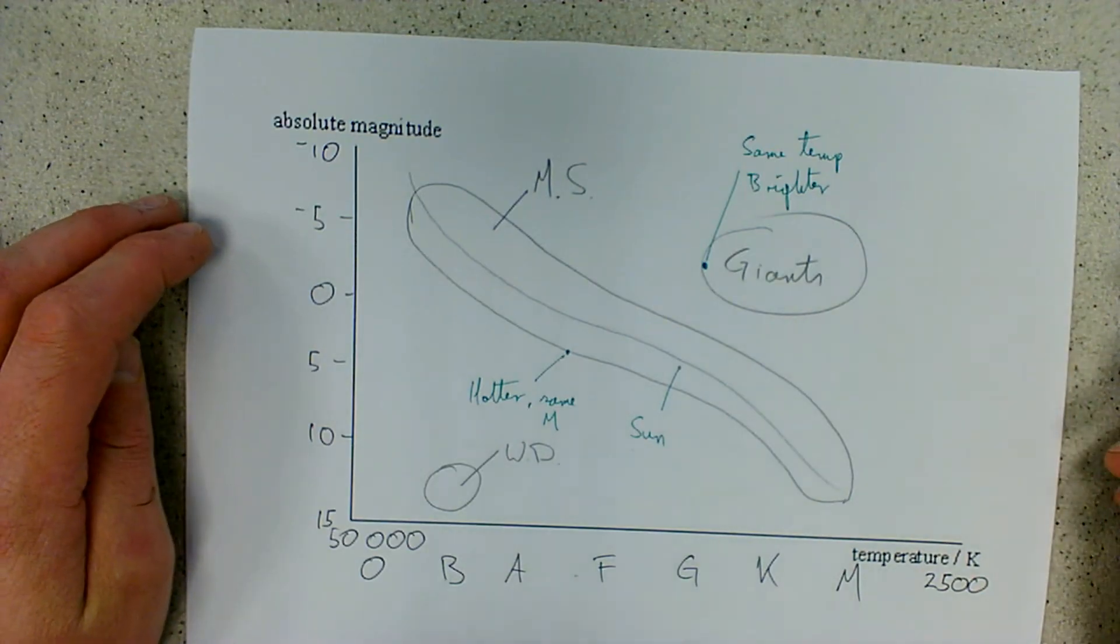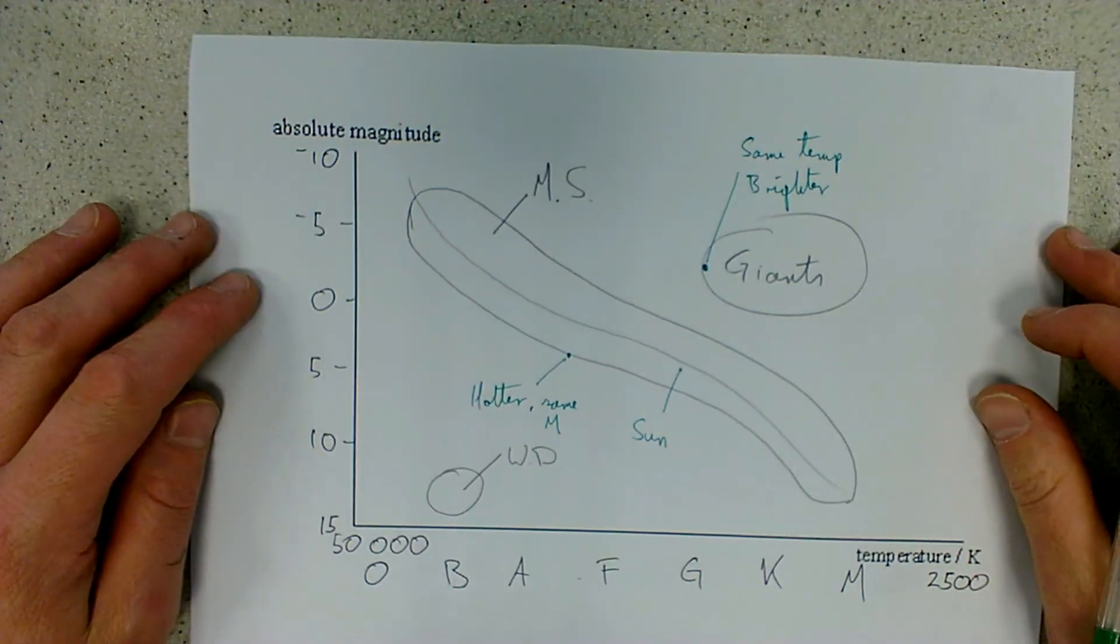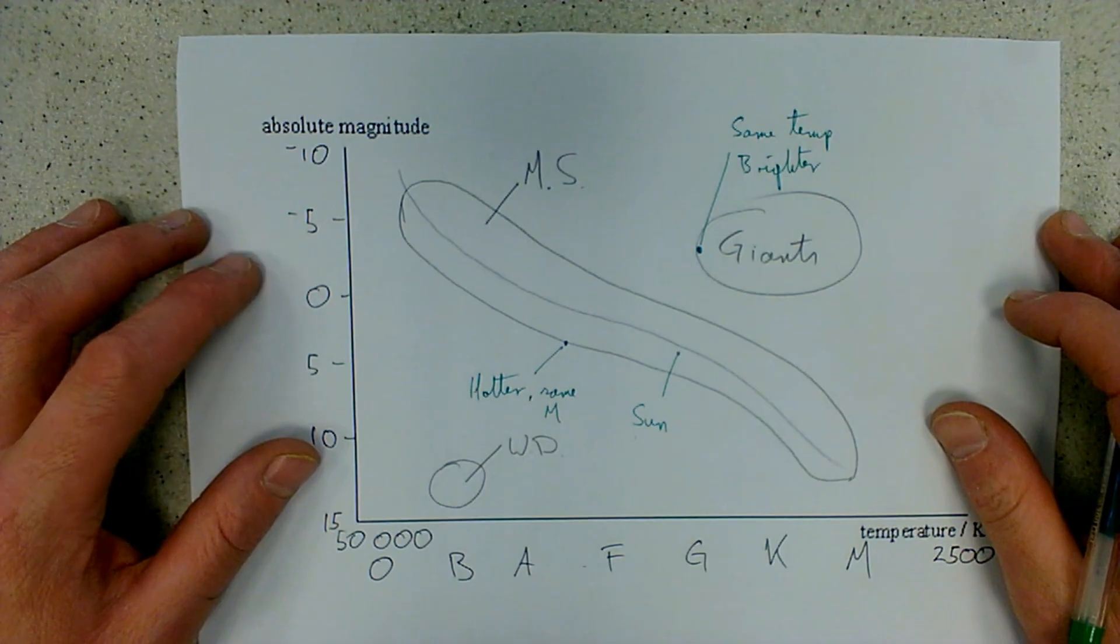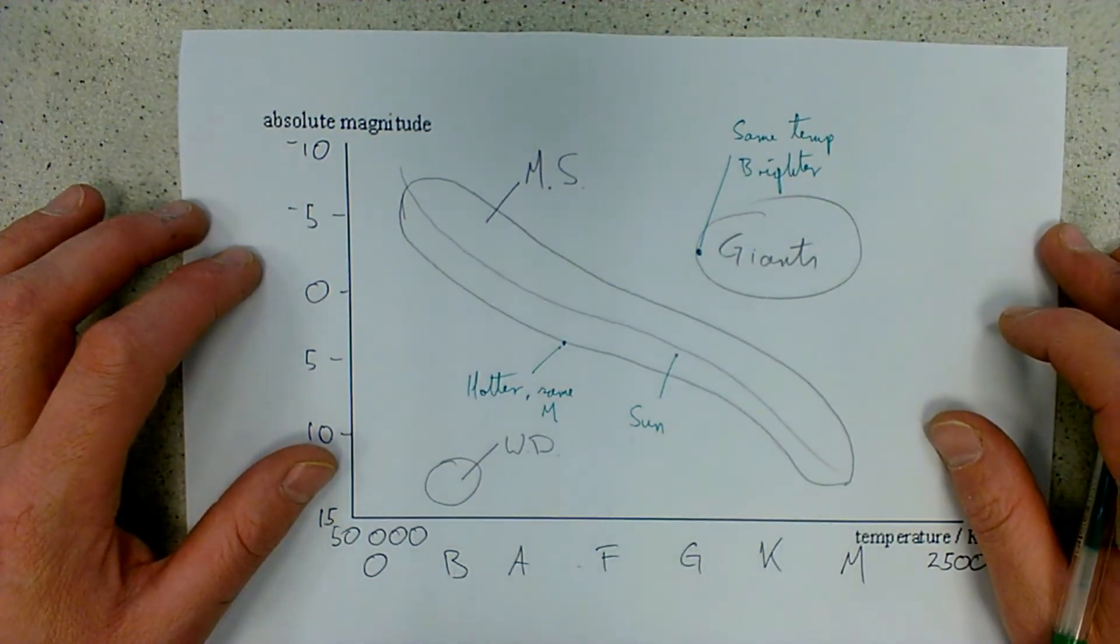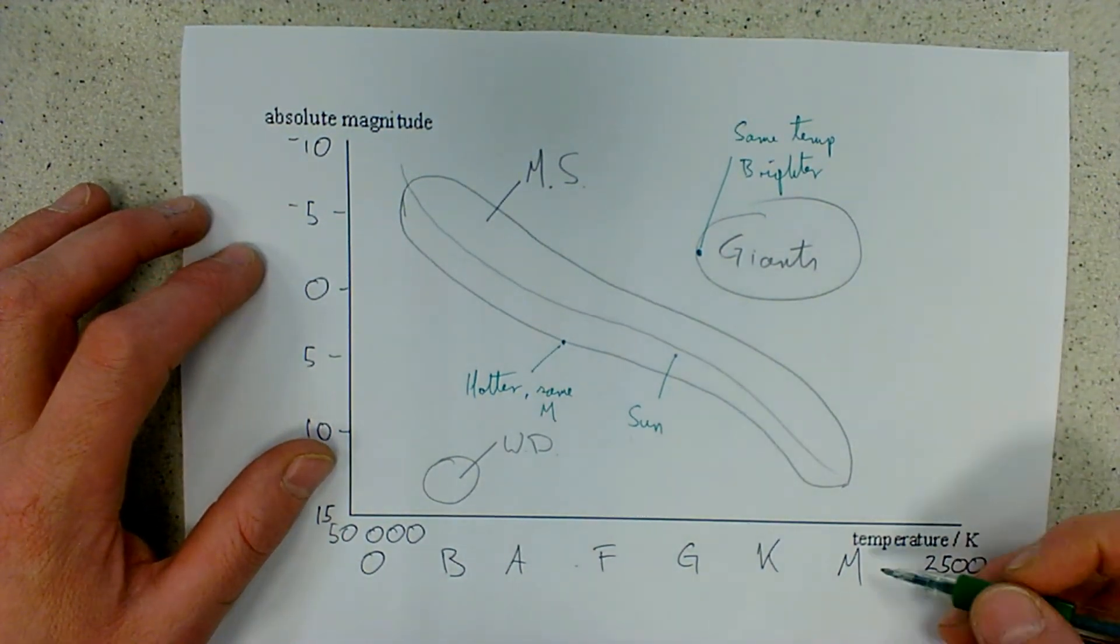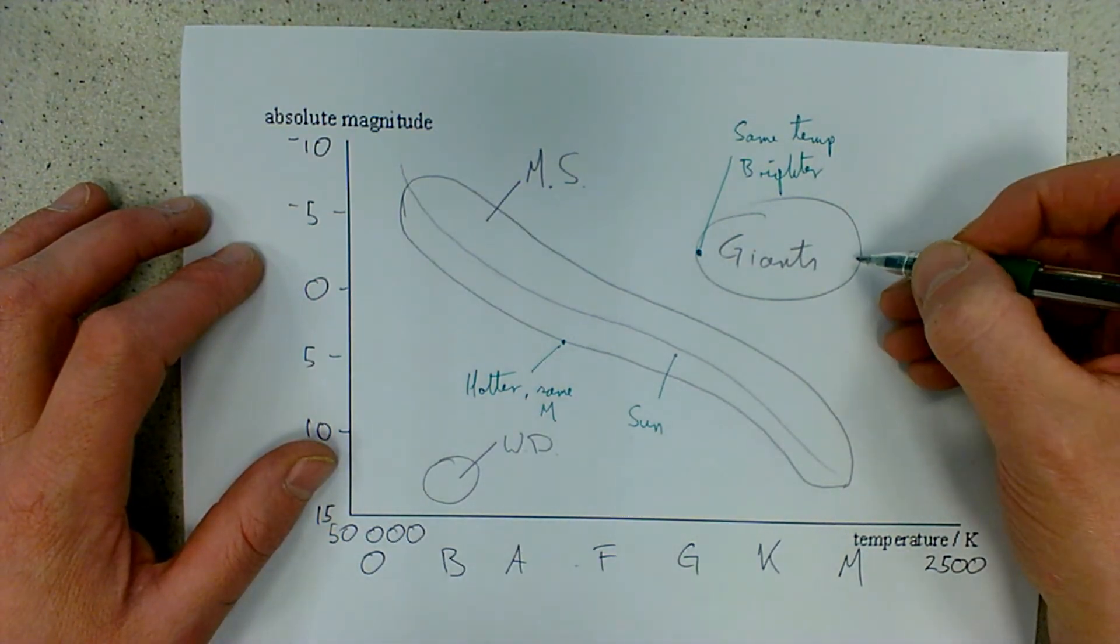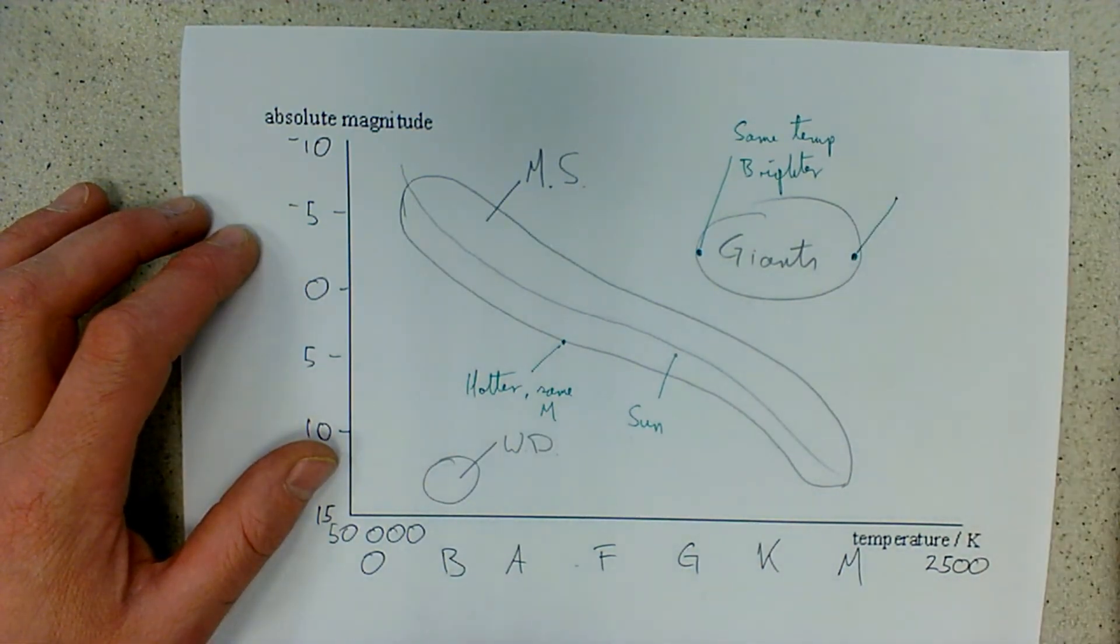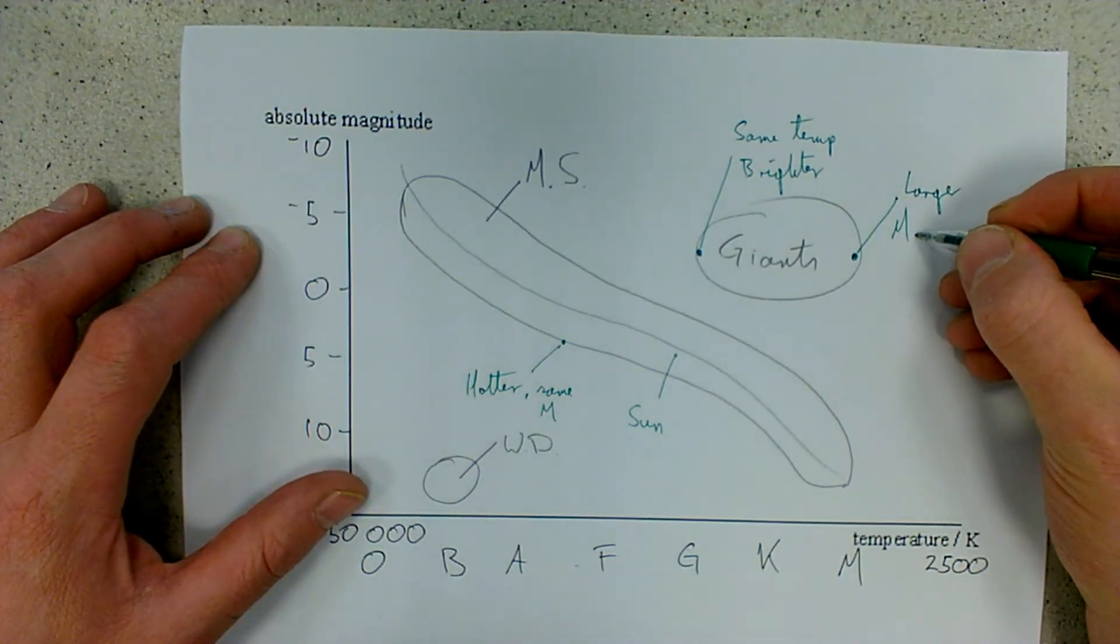We can also draw stars which are significantly larger and you might be expected to draw a star based on the description of the lines that it is creating in its spectrum. For example, if we wanted to represent a star which had molecular absorption lines in its spectrum, that would tell us if it's got molecular absorption lines, that it's a cooler star, so over here in the M class. But if it's also significantly larger, then it must be in the giant class, the giant cloud up here. So that dot there is a star which is larger, which shows molecular absorption lines.